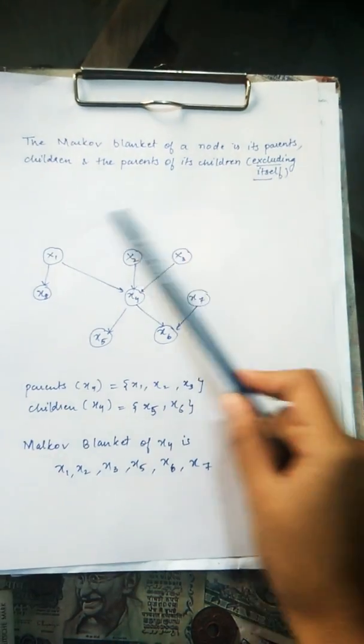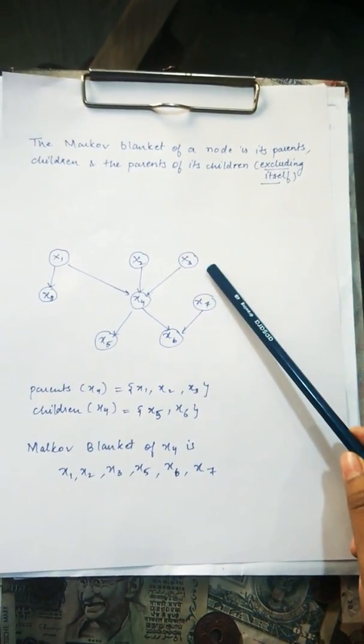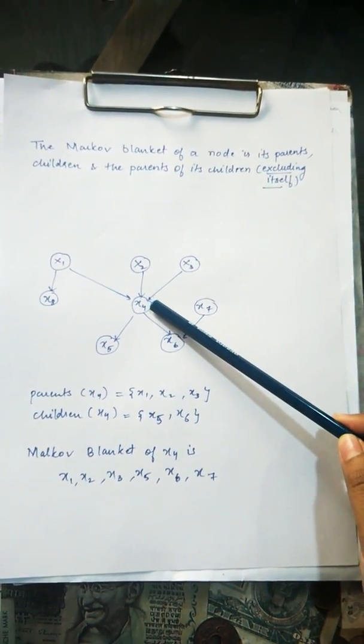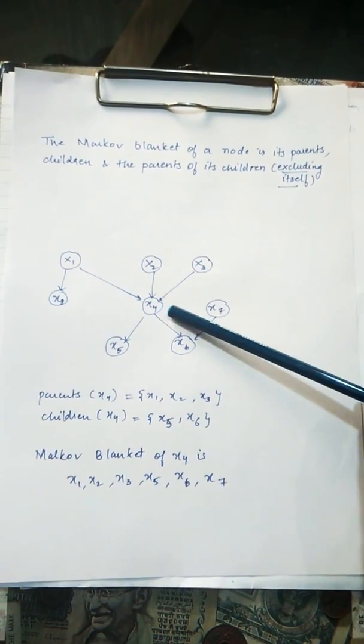So if we consider this graph and we have to find the Markov blanket of the node X4, then first of all we will consider the parents of X4.